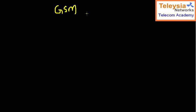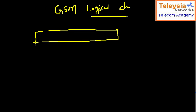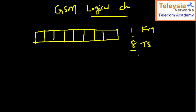Let us talk about the GSM logical channels. We understood what a physical channel is. In one frequency we have a time slot — one frequency has a time slot. On one frequency we have eight time slots, which we call physical time slots. The identity of each time slot is numbered zero, one, two, three, four, five, six, seven. These eight time slots are eight physical channels.